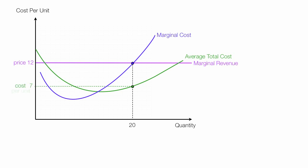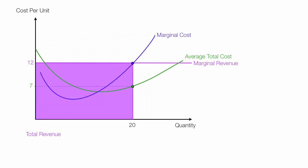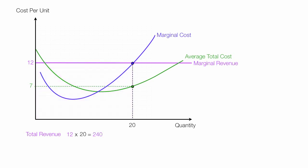That cost of 7 is cost per unit, and also price per unit. Total revenue is price times quantity, represented by the purple rectangle. In this case, 12 times 20 equals 240. That's price times quantity.